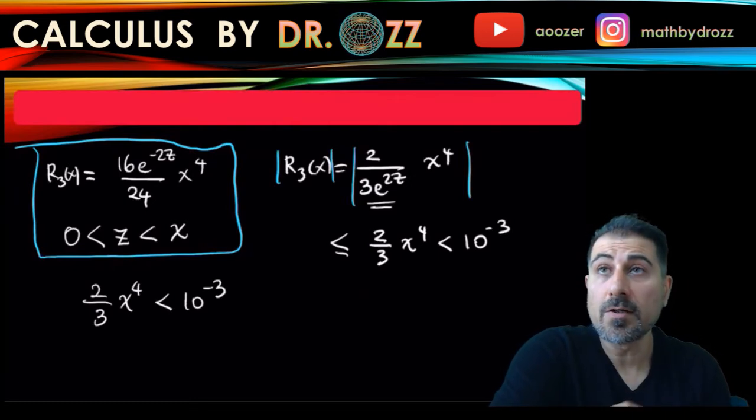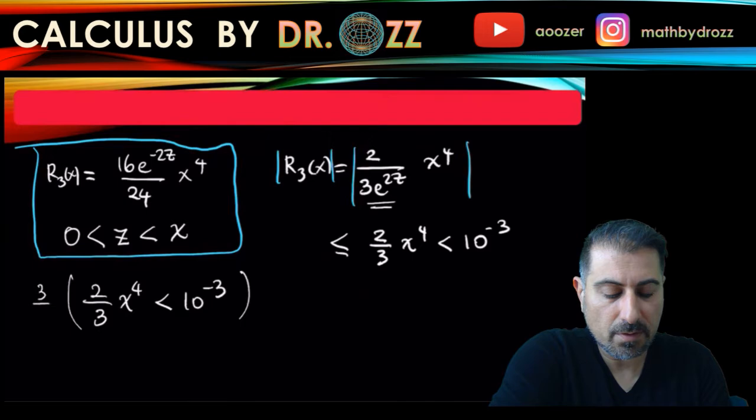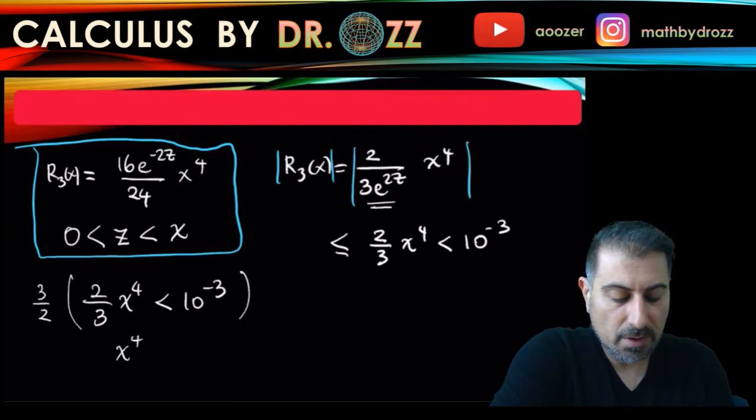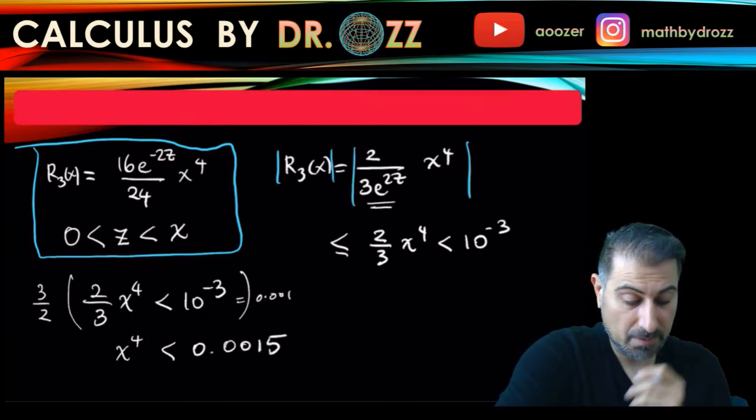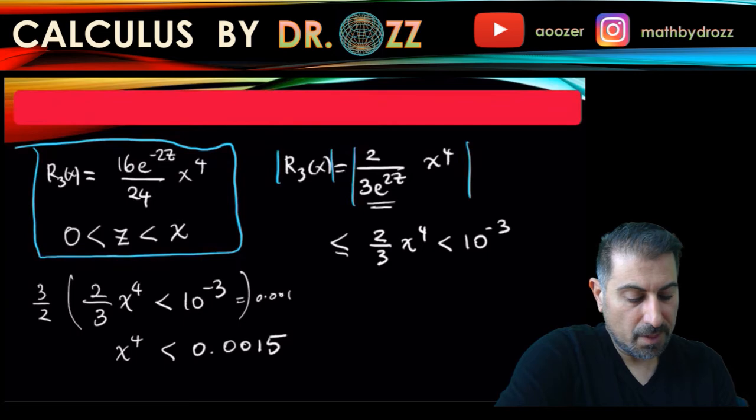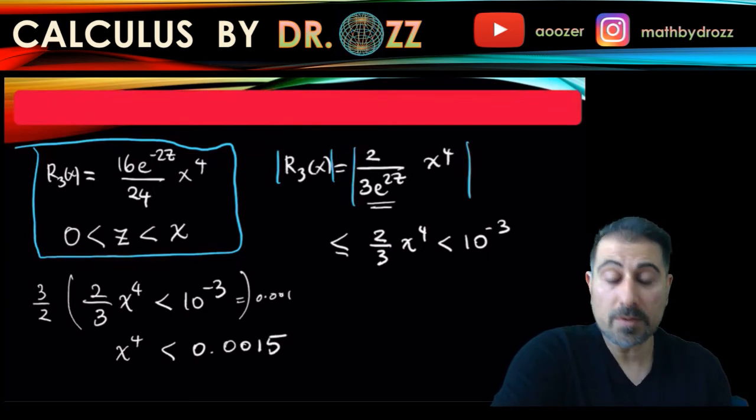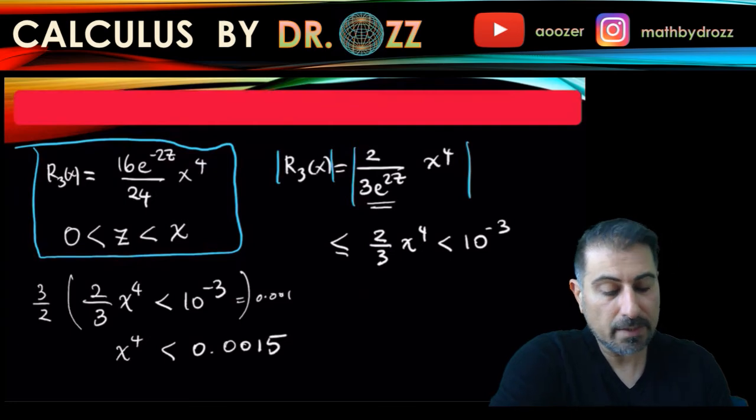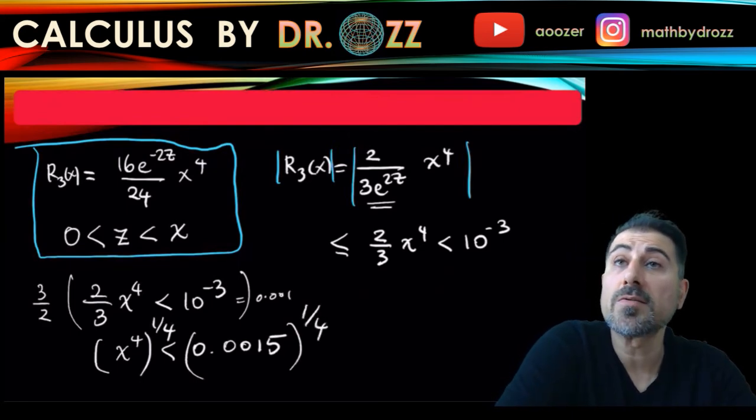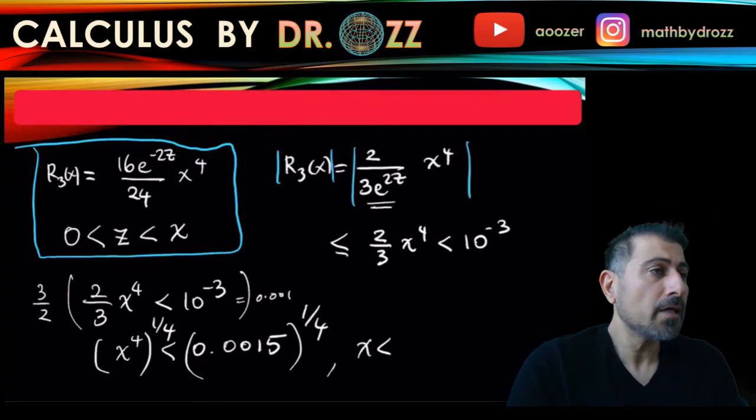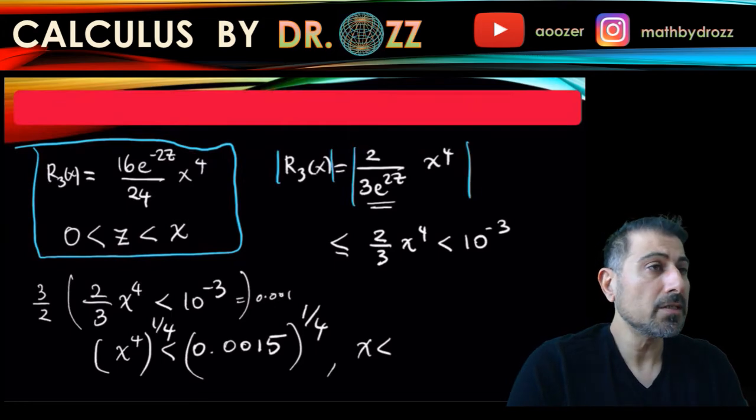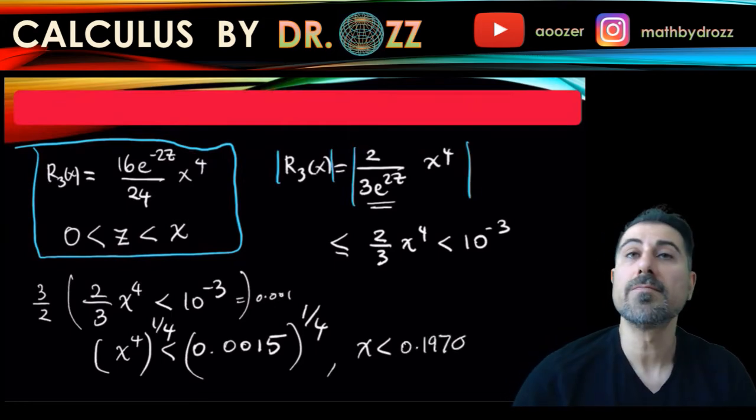I want to solve this for x. So let's multiply both sides by 3 halves. So x to the fourth is less than, this is already 0.001, 3 halves of that is going to be 0.0015. And if you take the fourth root of both sides of this inequality, so go ahead and calculate the fourth root, or one-fourth power, they're the same things, of this. So that on the left you have x. On the right, if you do your calculation, that should be 0.1970 approximately.